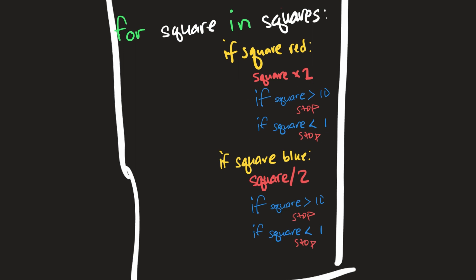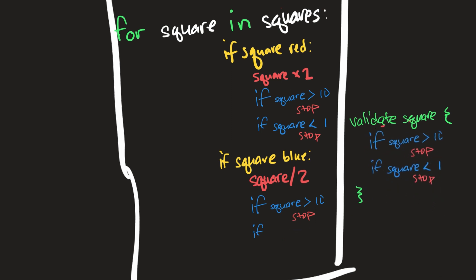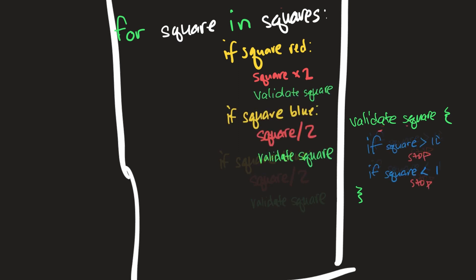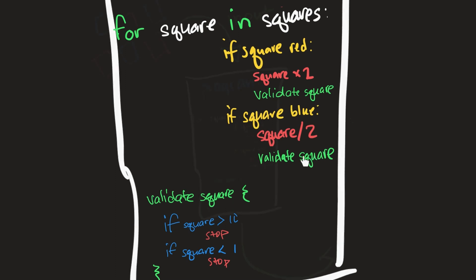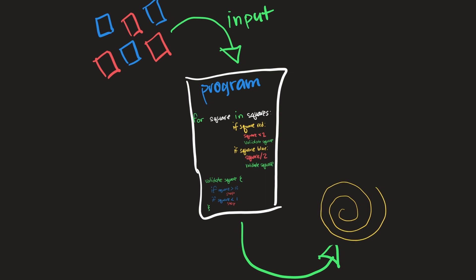We can extract this into one instruction. We'll call it 'validate square,' put it here with brackets to group it into one instruction. Now instead of duplicating code, we just say 'validate square' under both the red and blue if conditions. When we call validate square, we're actually executing the code defined in that separate section. Since the same thing needs to happen for both red and blue squares, we extract it, give it a name, and both conditions simply call validate square.